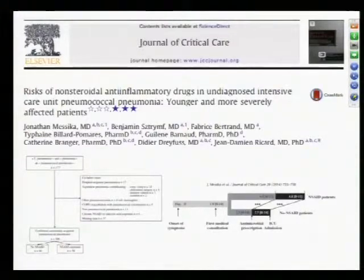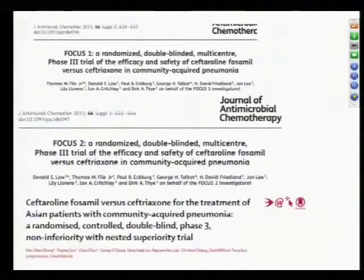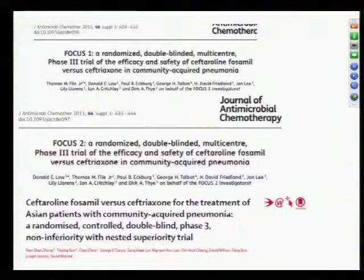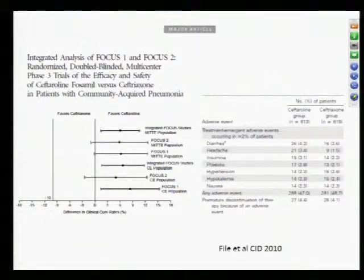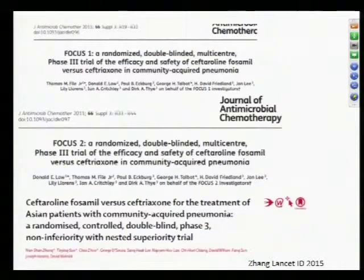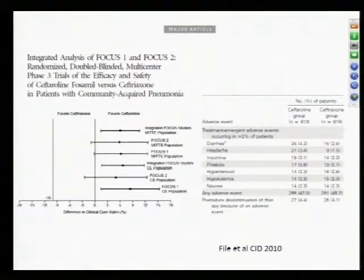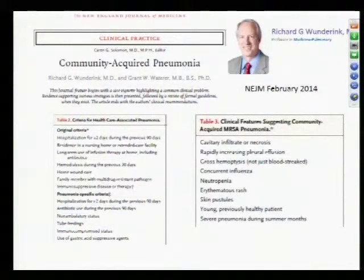Ceftaroline is a new drug approved for community acquired pneumonia — think of it as ceftriaxone with added MRSA coverage. Studies showed it is non-inferior to ceftriaxone for CAP, and possibly slightly superior due to being less protein-bound with a longer half-life. However, the CAP trials specifically excluded MRSA patients, and ceftaroline has not yet been studied for MRSA pneumonia. It may be an attractive option if you have specific MRSA risk factors.